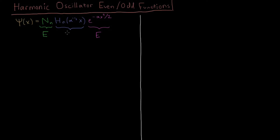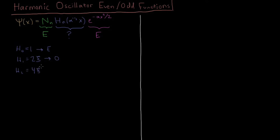What about the Hermite polynomials? Let's take a look at some of these polynomials and see what their values are. H0 is just 1, so that's a constant — that's even. H1 is 2 times the variable, which we usually write as c, so 2c as a function of c is odd. H2 equals 4c squared minus 2, and that is even.